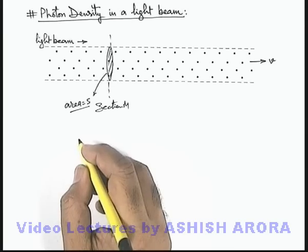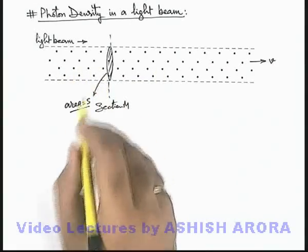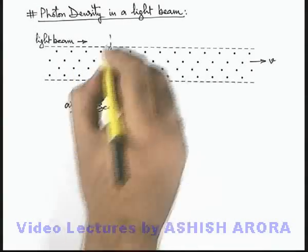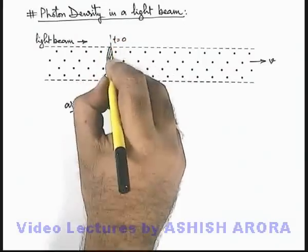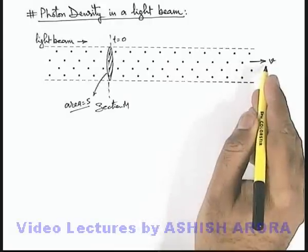In this situation, we can say when the light is propagating, the photons are continuously crossing the section. Say at t equal to zero, there are some photons which are located exactly on this section, which are travelling at a speed v.